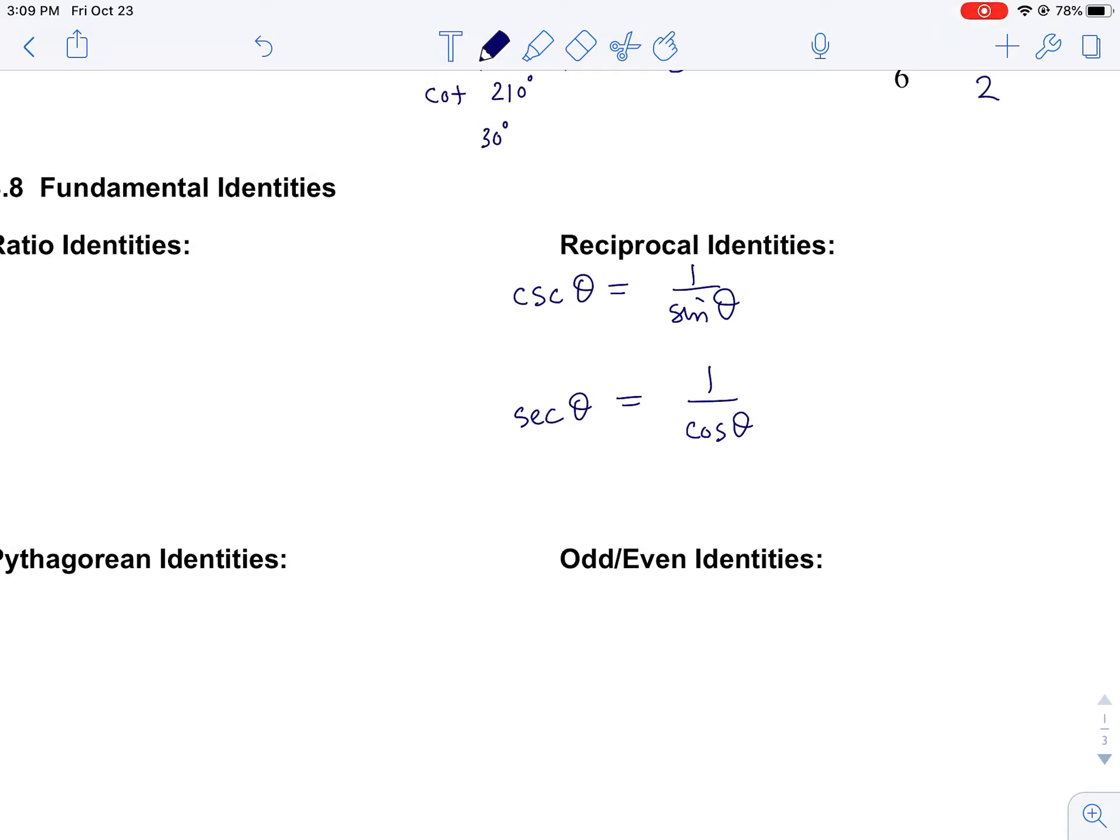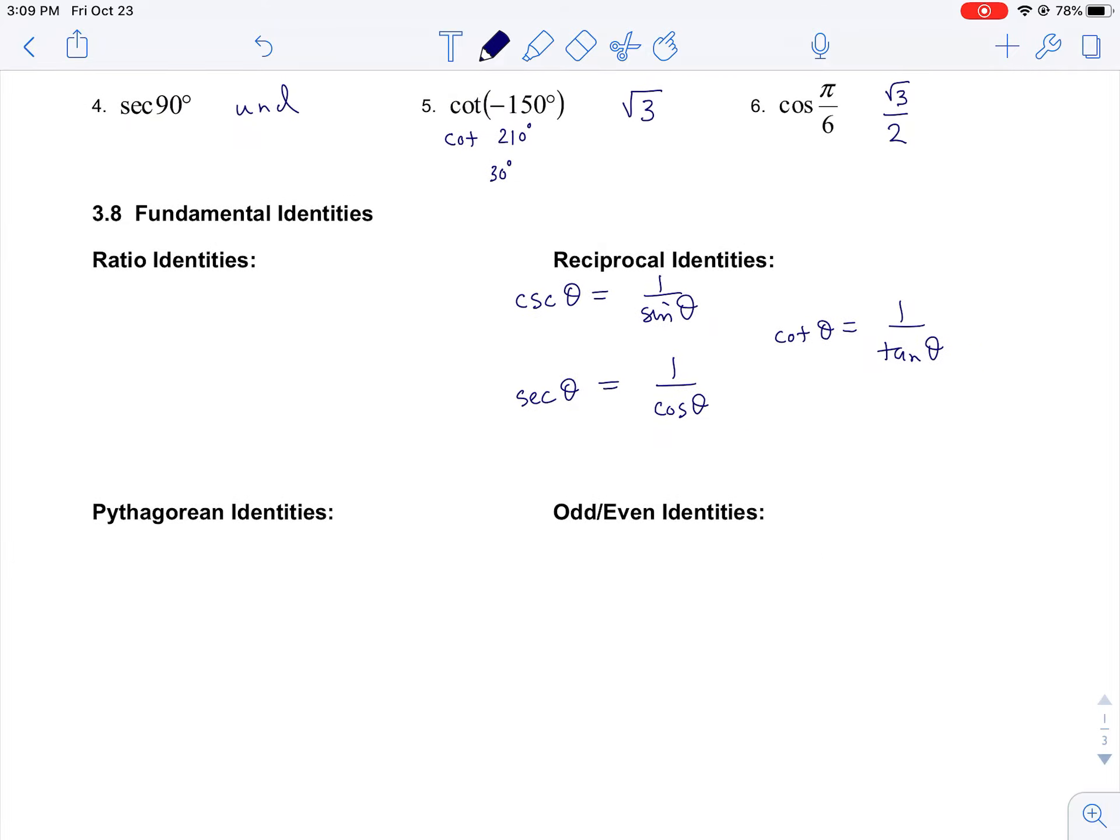The secant of θ is the reciprocal of cosine, so we would write secant θ equals 1 over cosine. And finally, the cotangent is the reciprocal of tangent: cotangent equals 1 over tangent. It's just a way to rewrite the functions.